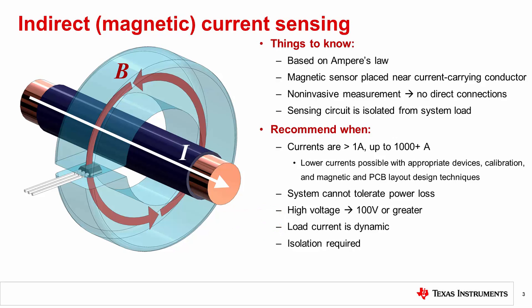In the past, indirect current sensing was typically only used to measure currents of 100 amps or greater. The sensors were relatively expensive and not conducive to sensing currents on a PCB. Also, some amount of magnetic design was often necessary, such as using magnetic cores to attenuate or concentrate the magnetic flux seen by the sensor. However, advancements in technology and reductions in price have resulted in newer devices, such as in-package magnetic current sensors, which are relatively inexpensive and well-suited for lower currents on a PCB.